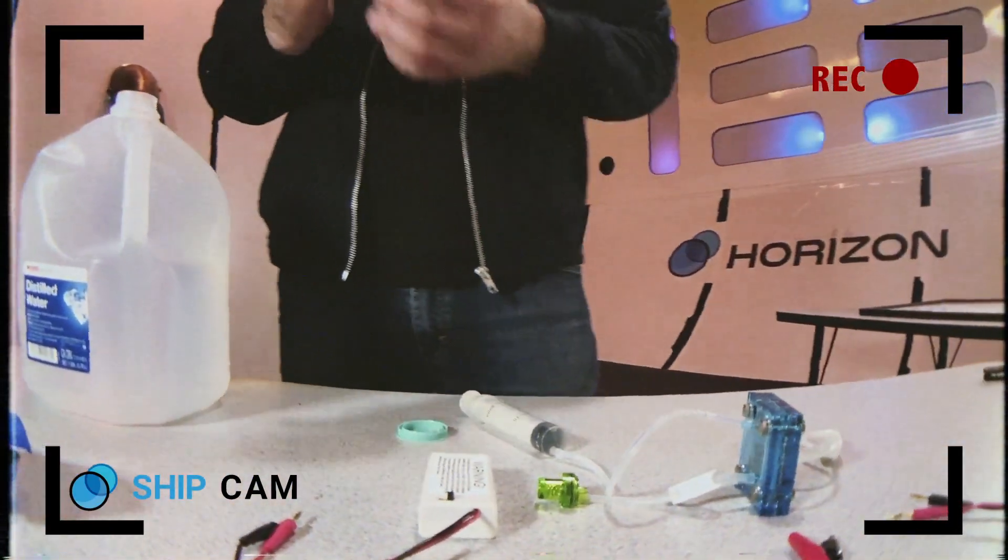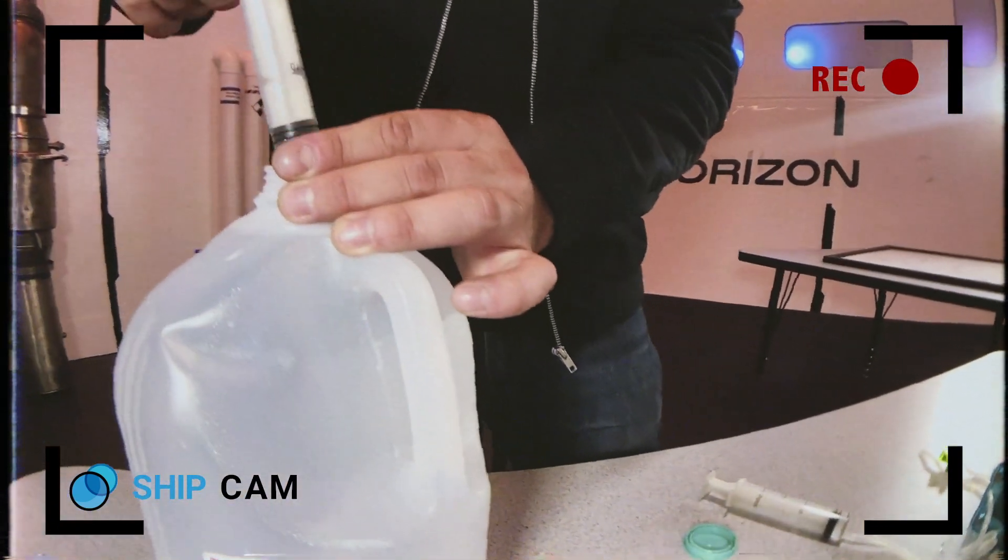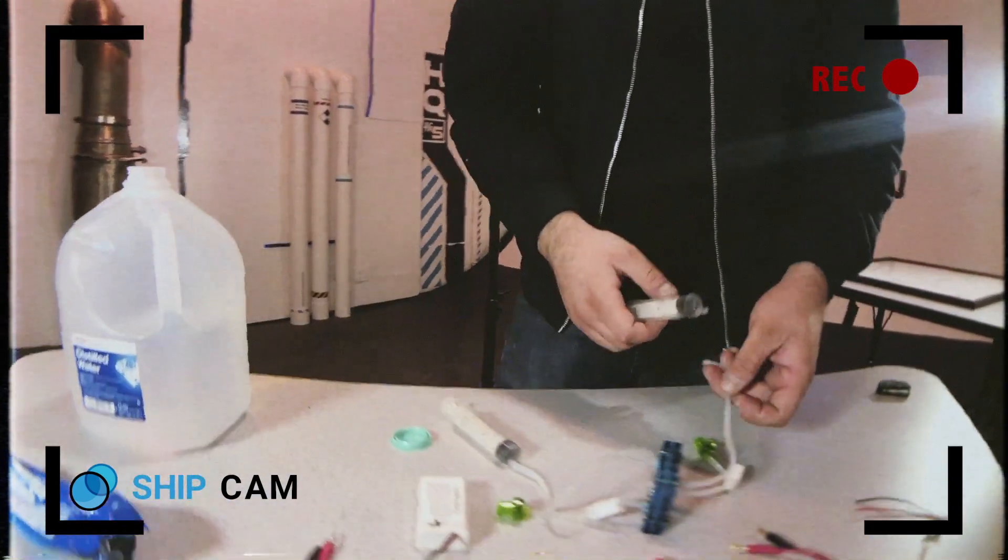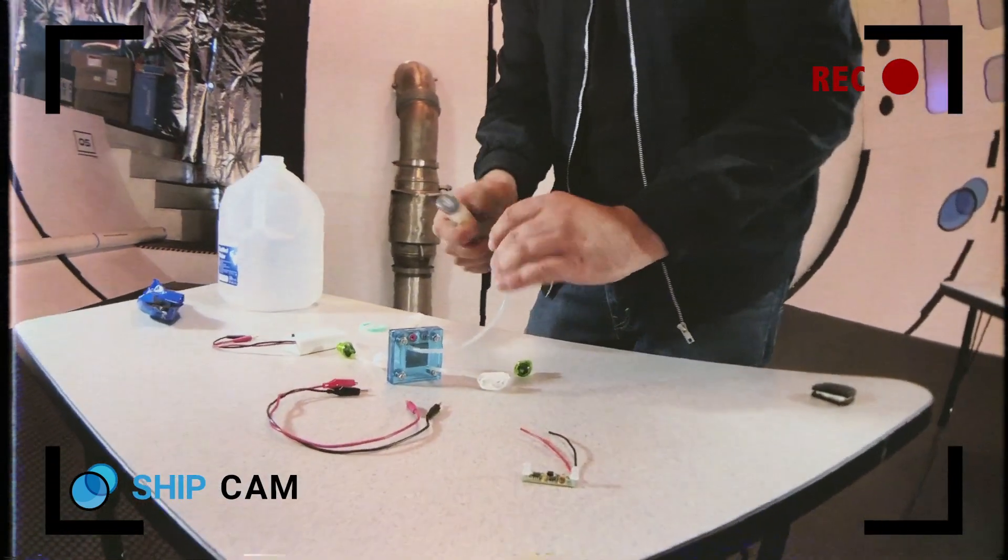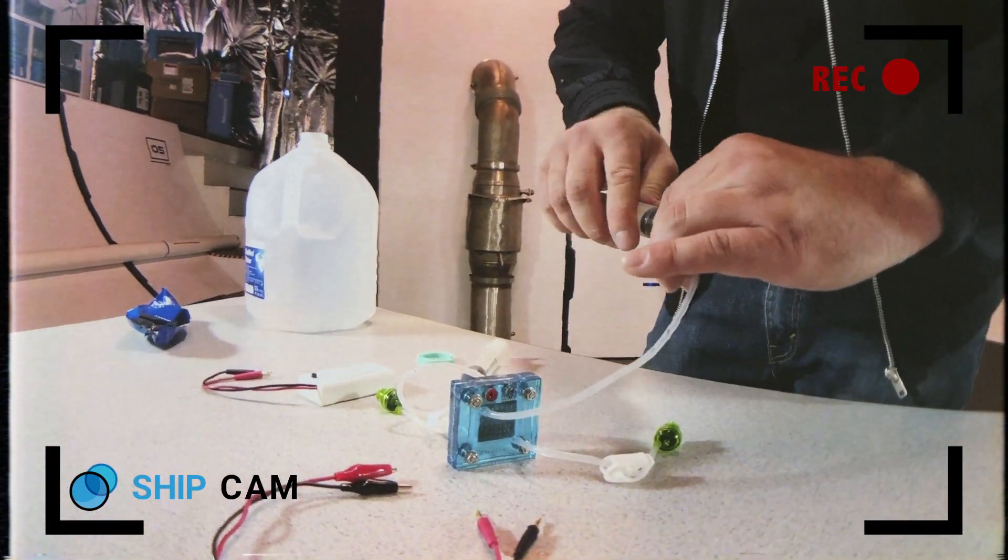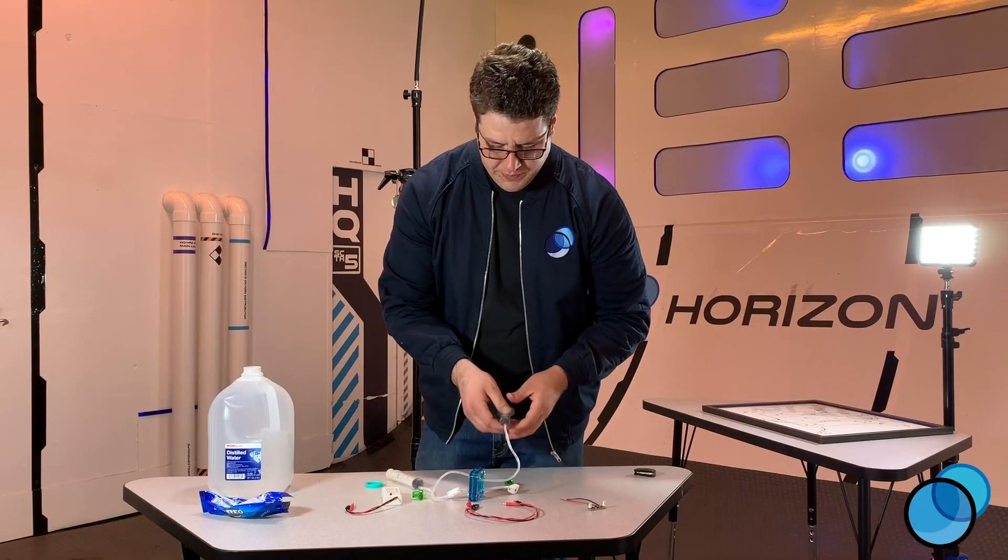And then we're going to get our second syringe here. Do the same thing. About three milliliters. And we're going to plug it into our oxygen side. Now you may notice this part's a little tricky. It's okay. Just keep at it. You'll get it. I promise.